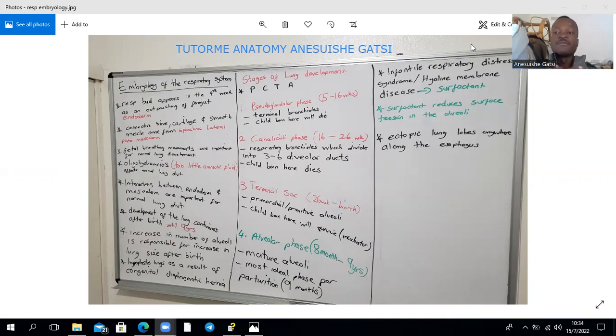For normal lung development, you should have interactions between the endoderm and the mesoderm. The endoderm induces the mesoderm to form the smooth muscle, the cartilage, the connective tissue, and the pulmonary blood vessels, whereas the mesenchyme induces the endoderm to form the epithelium of the glands. The mesenchyme will express fibroblast growth factor 10, which induces the endoderm, whereas the endoderm will express WNT7B, which induces the mesenchyme to form its structures.